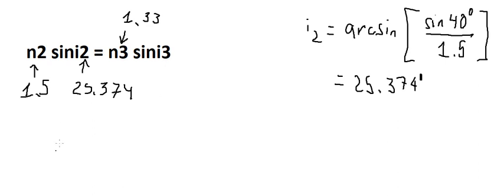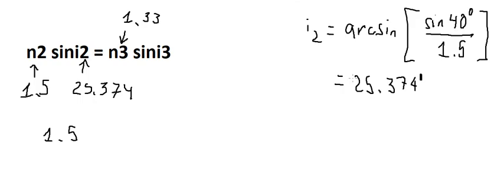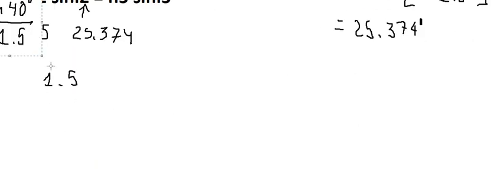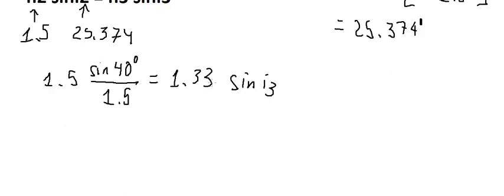So we just input the number in here. So we have sin θ2 equals to this one. And n3, this is about 1.333. So we simplify 1.5. Later that, we divide both sides with 1.333.